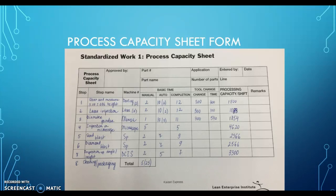For the first step, we divided the available time by 12 seconds, giving 1,800 processing capacity. The second step gave 1,883; the third step 1,884; the fourth step 4,620; the fifth 2,566; the sixth 2,566; and the seventh 3,300. From all this capacity data, we identified that the bottleneck is the third step — the Monza tool.